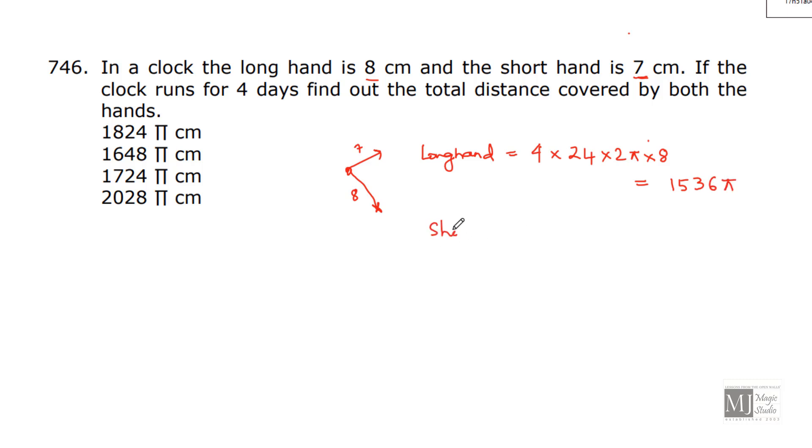Now, the short hand is our hour hand. And this short hand would be completing 1 circle in 12 hours. So, in 4 days, how many sets of 12 hours are there? 2 sets each day. And then 2πr would be the circumference of this short hand.